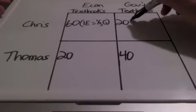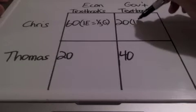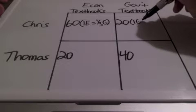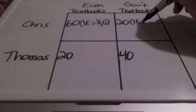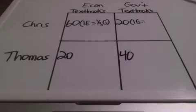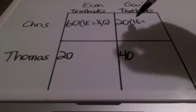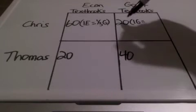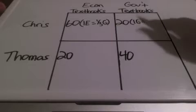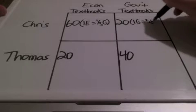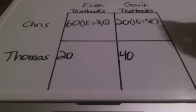Now, for every one government textbook that Chris can produce, we do the same thing. The other side goes over: 60 divided by 20, giving us three economics textbooks.